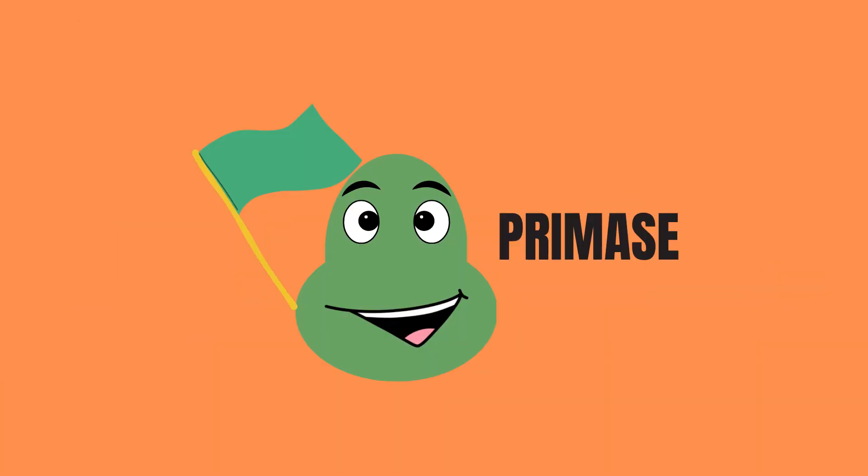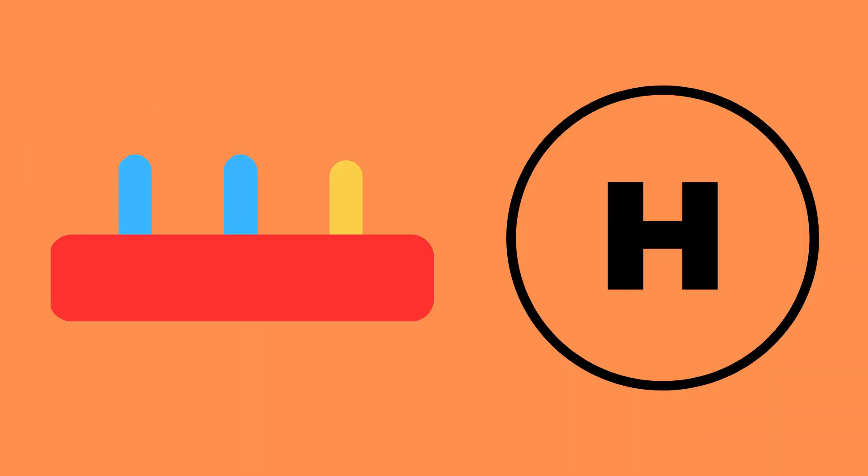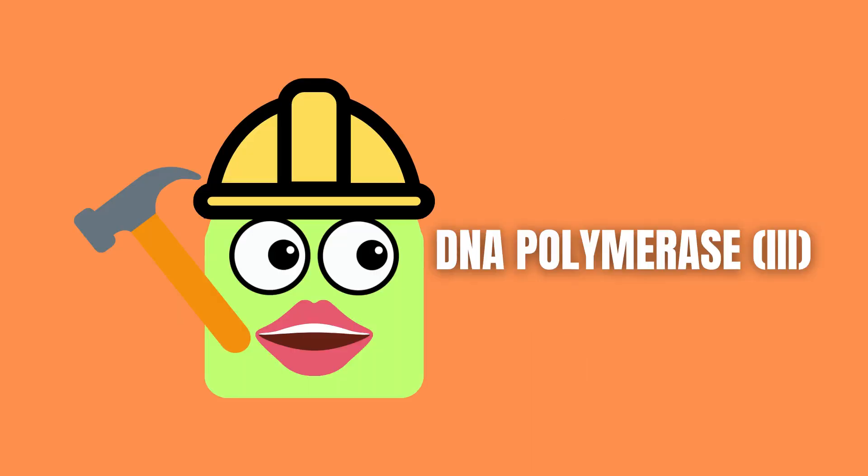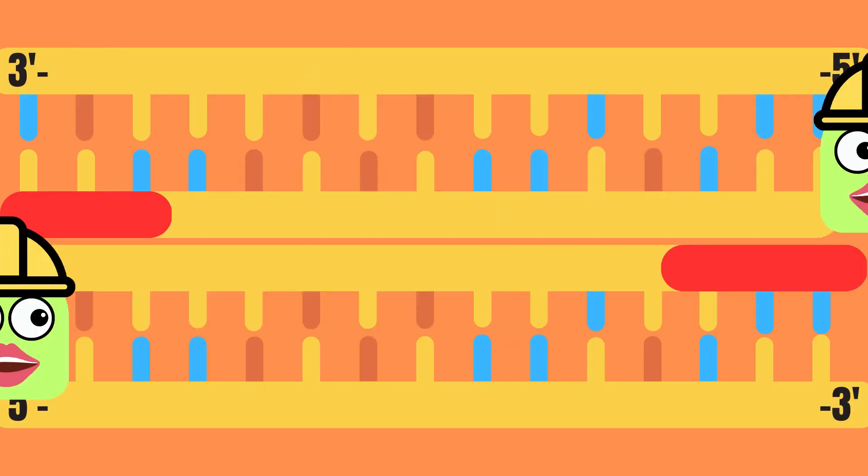Second, the primase creates an RNA primer on each strand which you can think of as a helicopter landing pad. DNA polymerase 3 can then attach to each primer and build two new strands of DNA in the 3' to 5' direction.